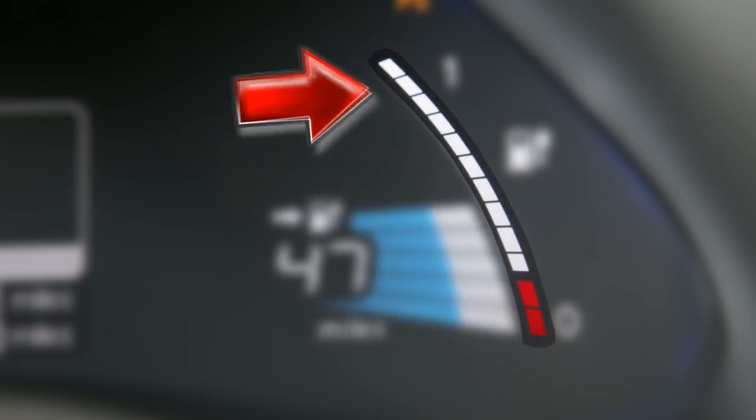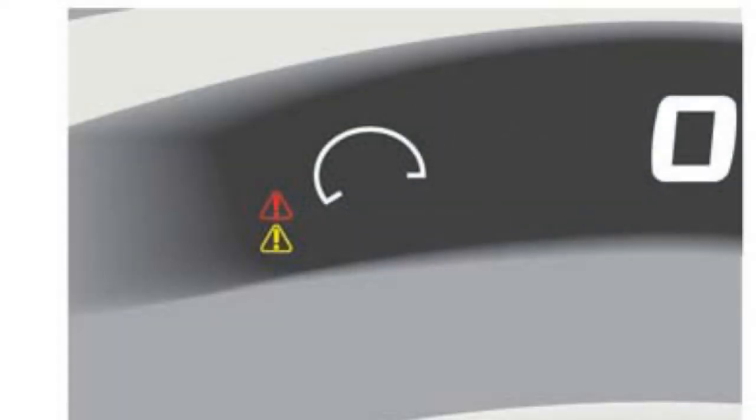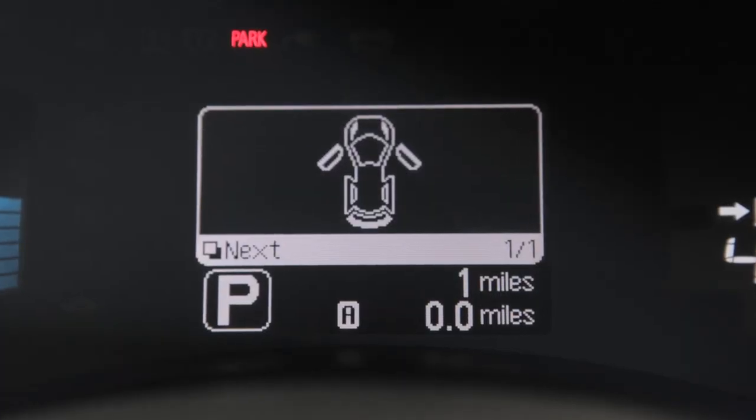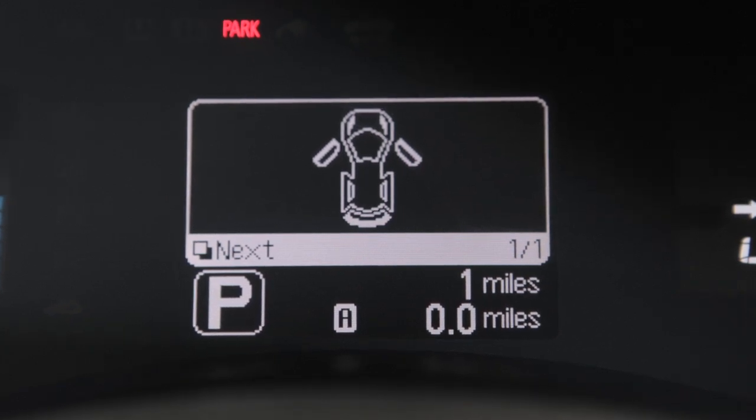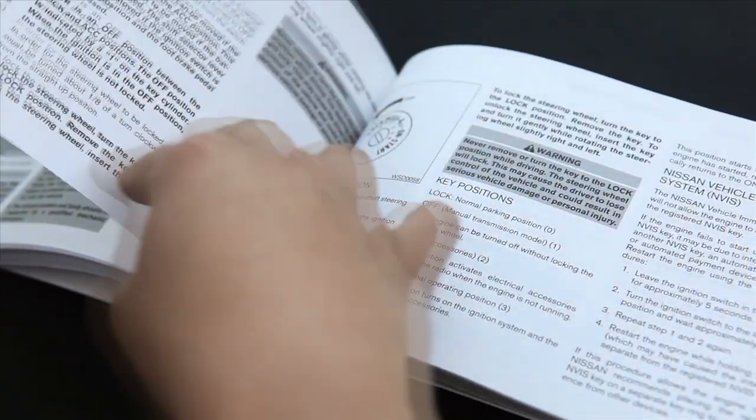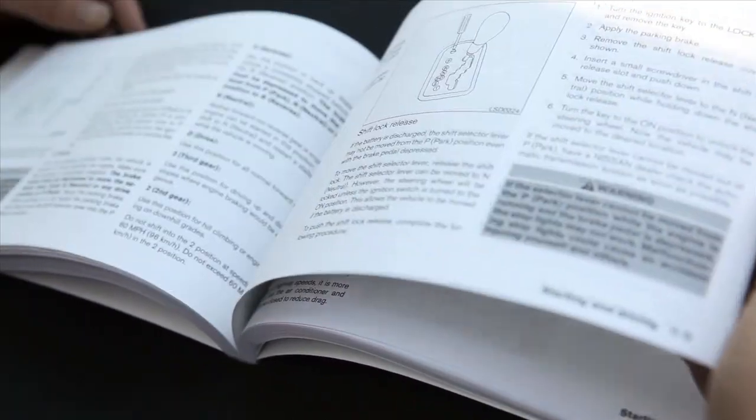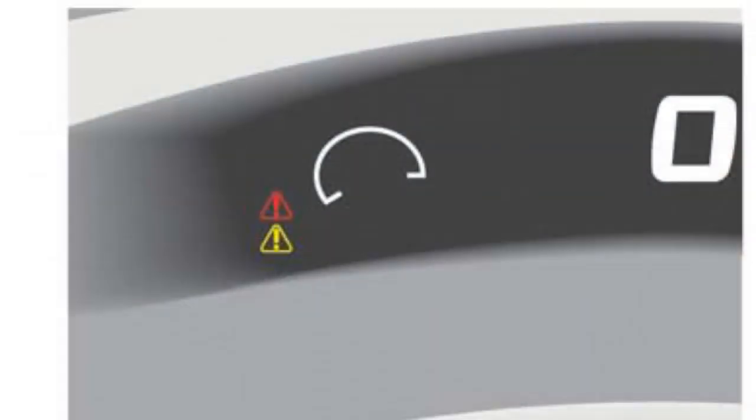The master warning lights illuminate when any warning or indicator lights are illuminated, or if any vehicle information warnings appear in the dot matrix liquid crystal display. This light may illuminate for a variety of reasons, and the color of the light that illuminates depends on the type of malfunction detected. Consult your owner's manual for further information on the master warning lights and additional details on its operation.